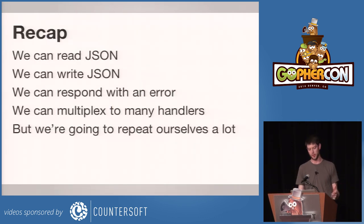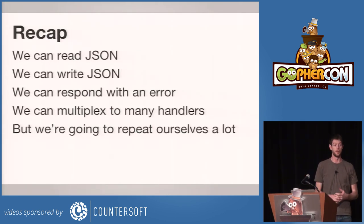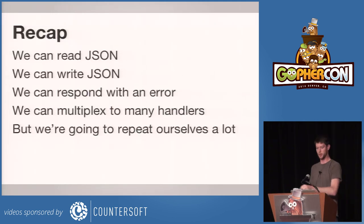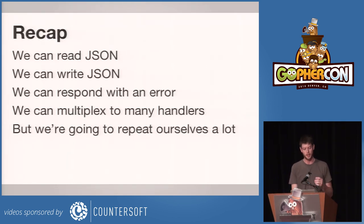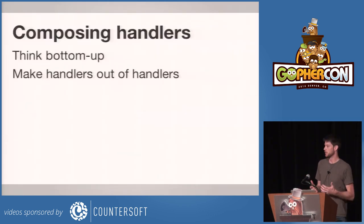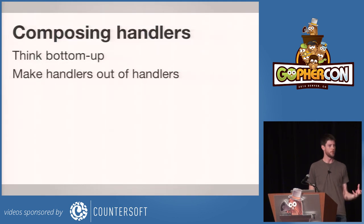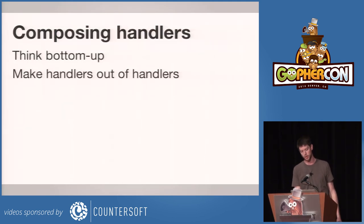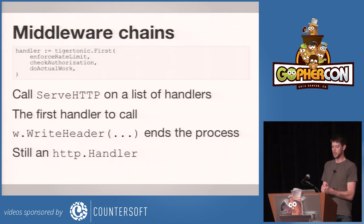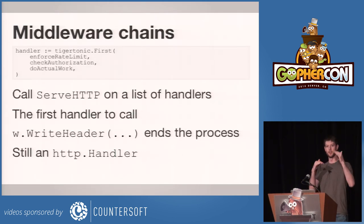We can do a lot of things with our web services, and that means we're going to come head-on with the problem of repeating ourselves because every one of those things in your web service probably needs to be authorized, probably needs to check rate limits, probably needs to do 15 other things that you have to share at some level. Now we're getting into the territory where we're going to compose handlers in a more generic sense — not just for routing, but for any number of things. We think about it from the bottom up, from very primitive components like a rate limiter, and you wrap handlers in each other to build out the functionality you ultimately want.